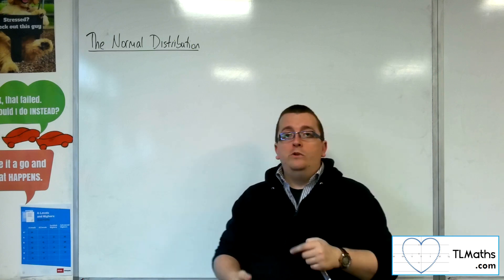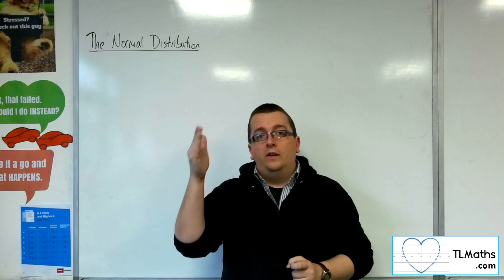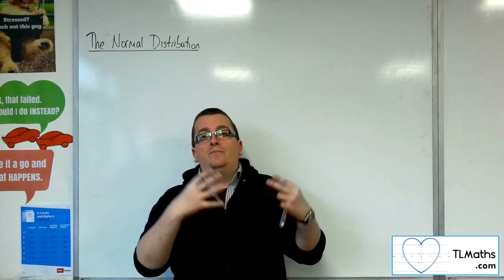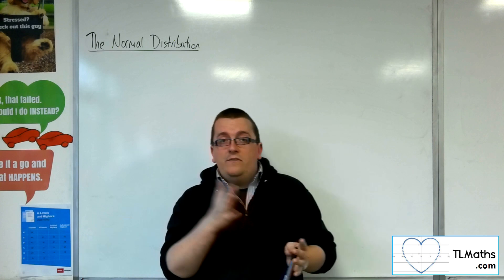So whereas the binomial could take on only discrete values, so 0, 1, 2, 3, 4, etc., the normal distribution can take on any value in between.